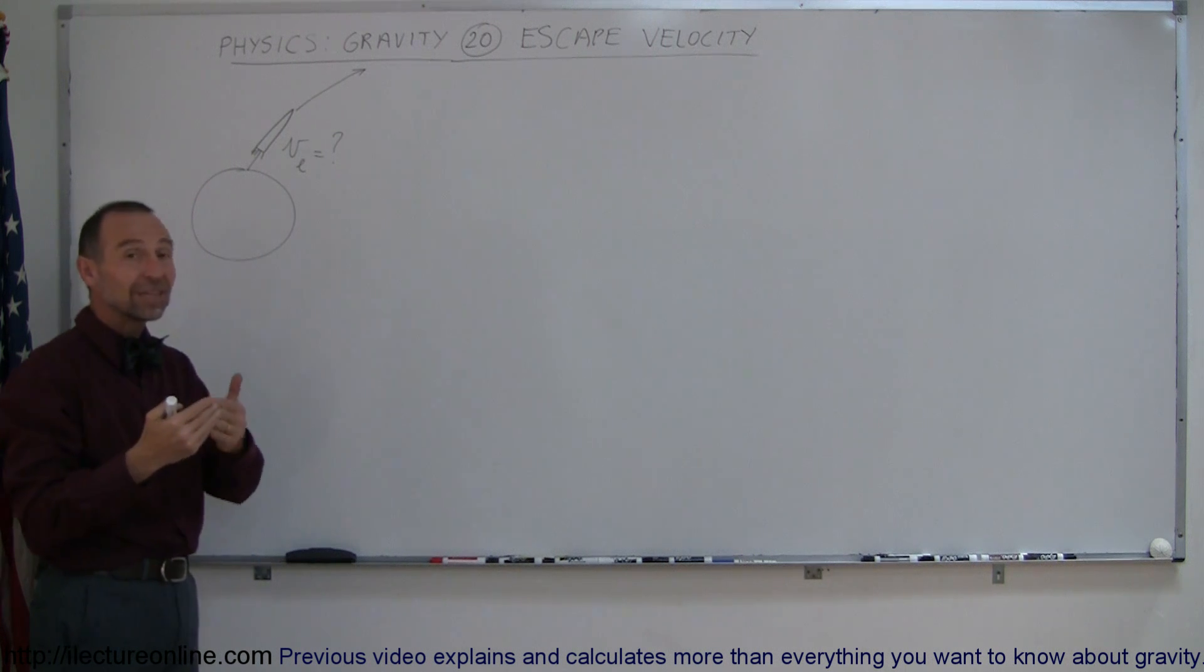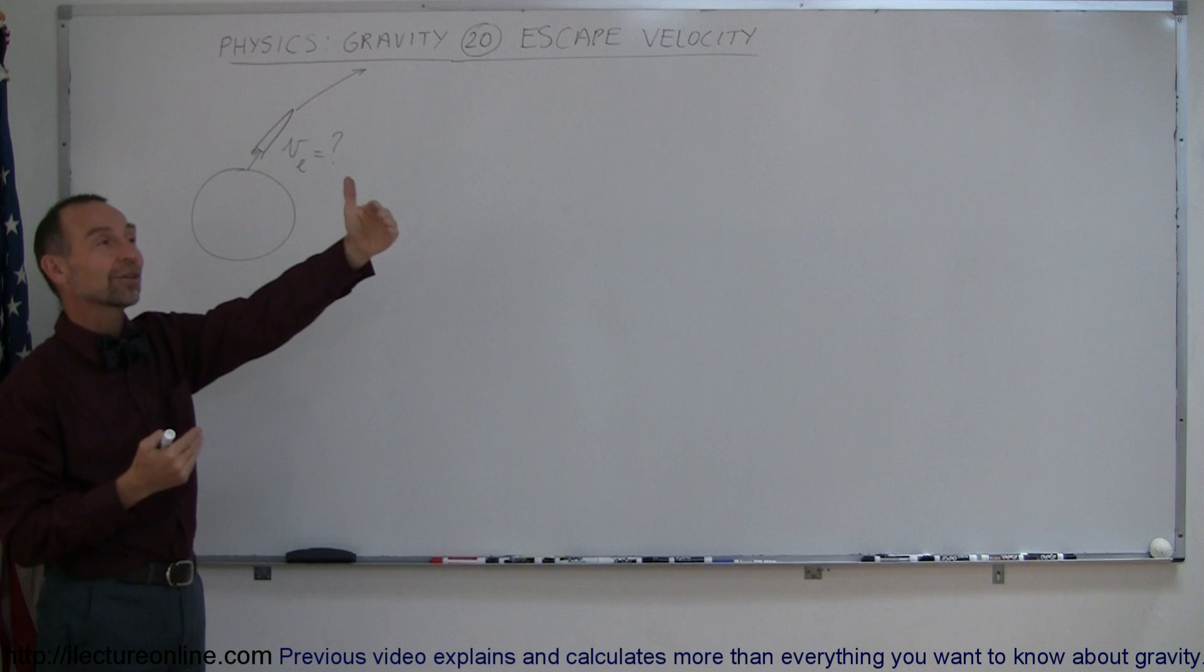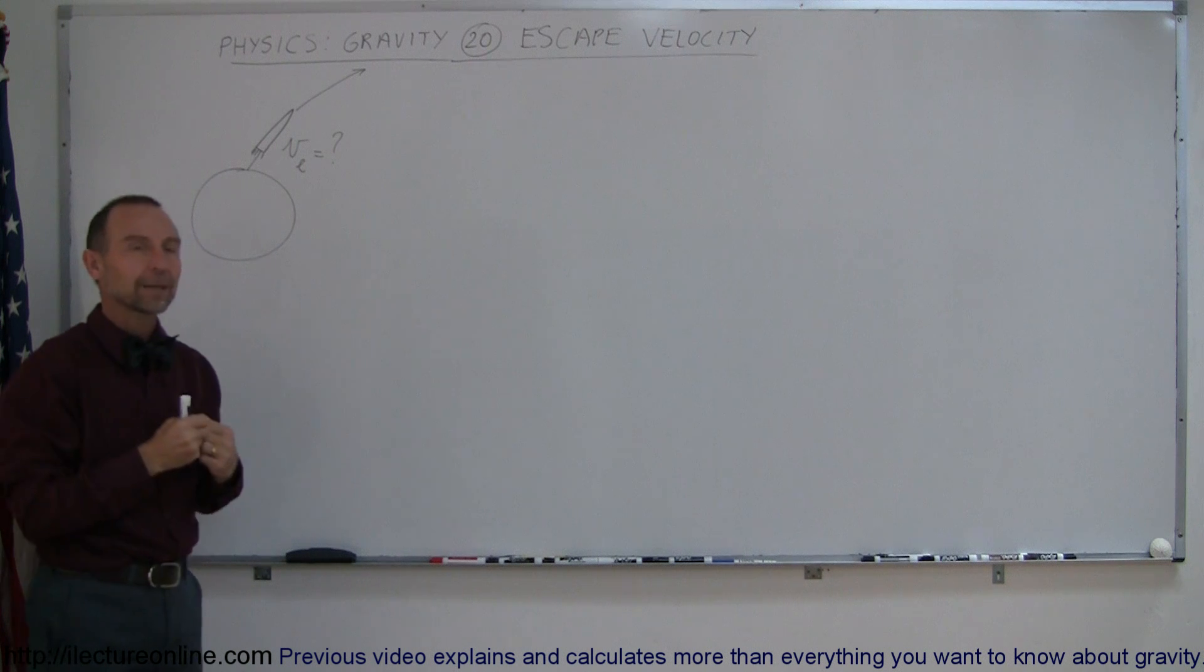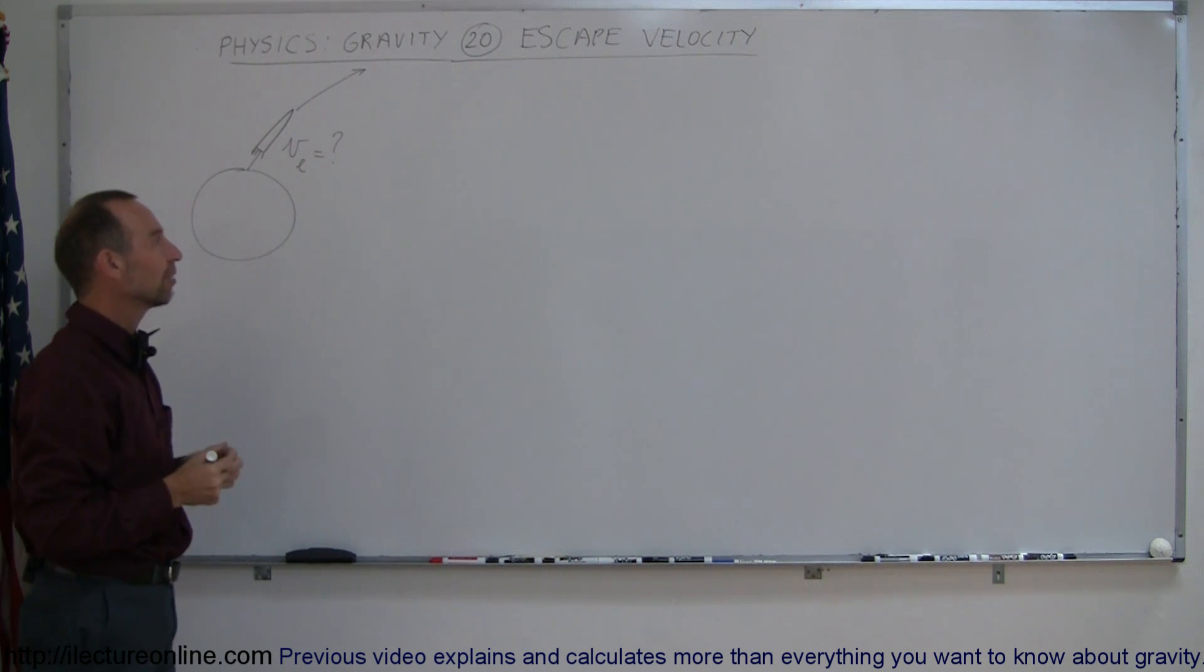Or in the limit, when it finally reaches infinite distance away from the Earth, at that point it can stop. At that point, it will no longer fall back to the Earth because it's so far away from the Earth that gravity will no longer pull it back. So, how do we find that escape velocity?